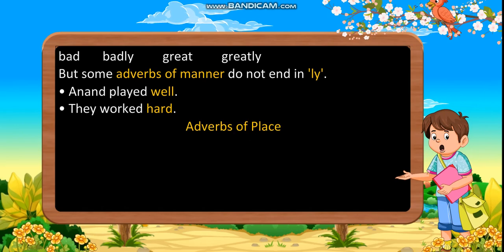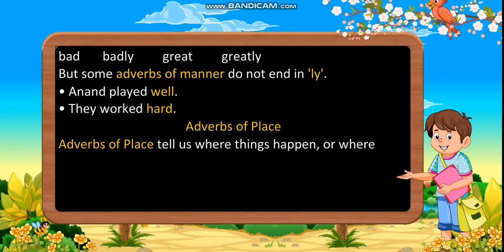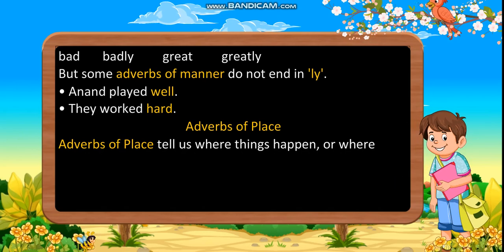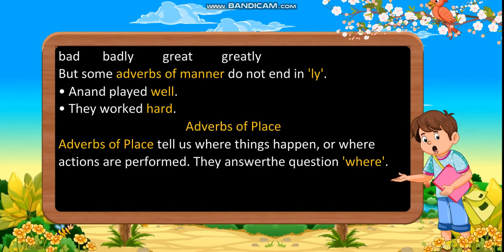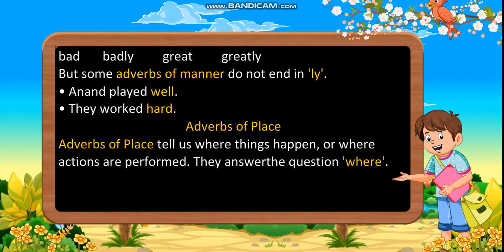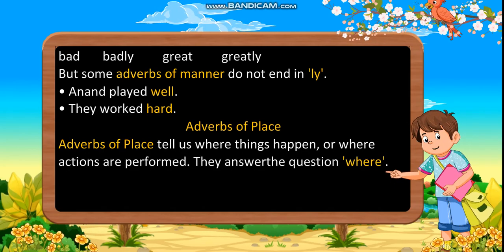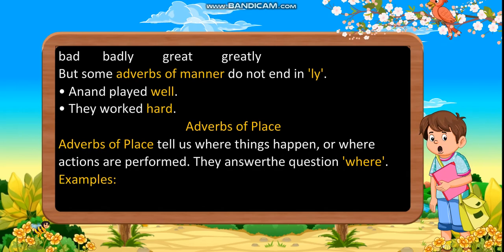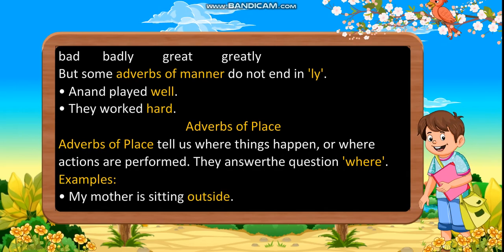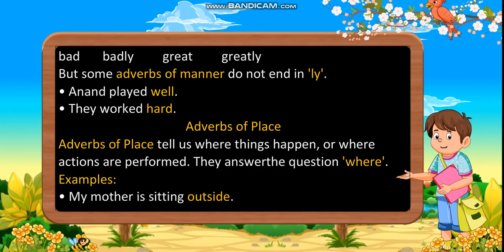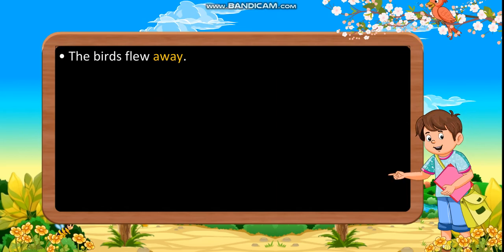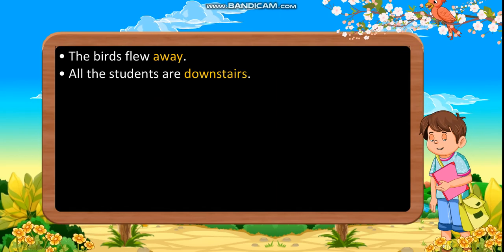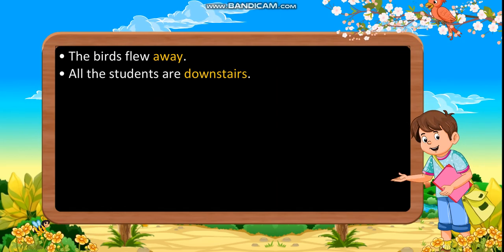Adverbs of place tell us where things happen or where the actions are performed. They answer the question: where. Examples: My mother is sitting outside. The birds flew away. All the students are downstairs.